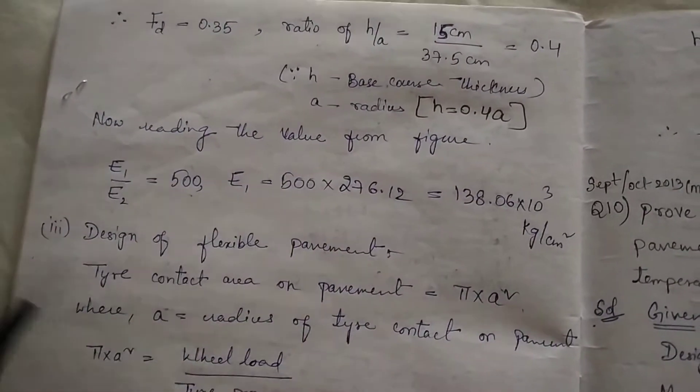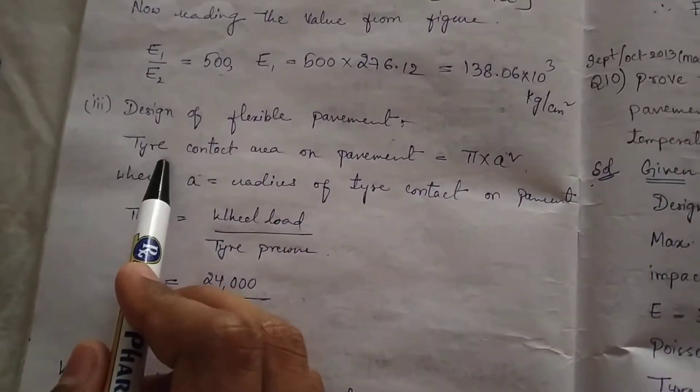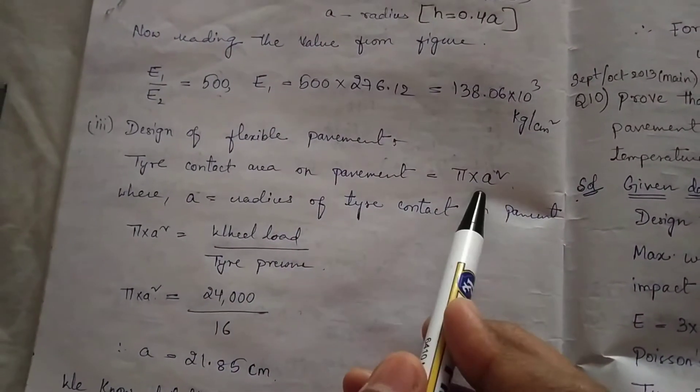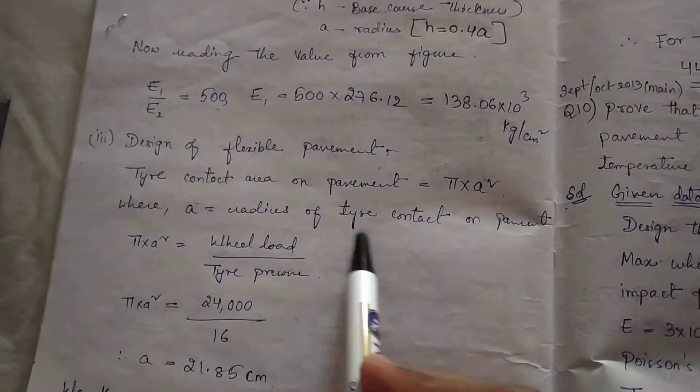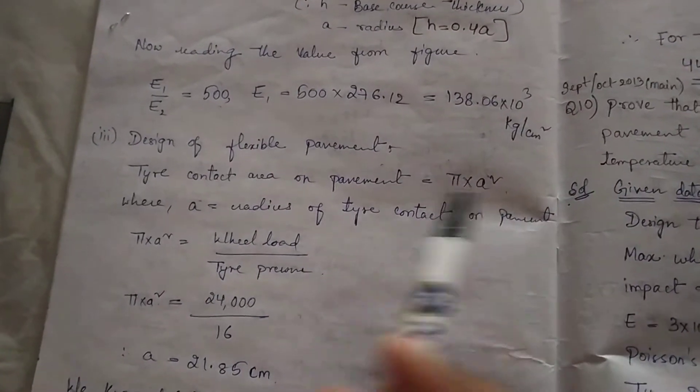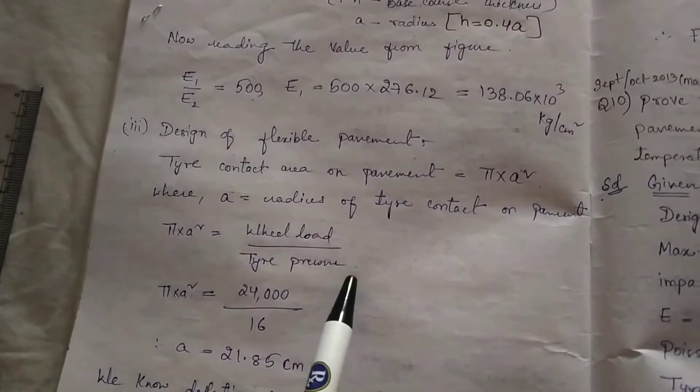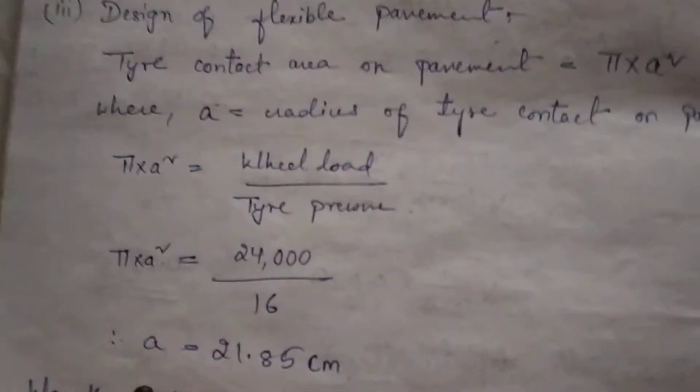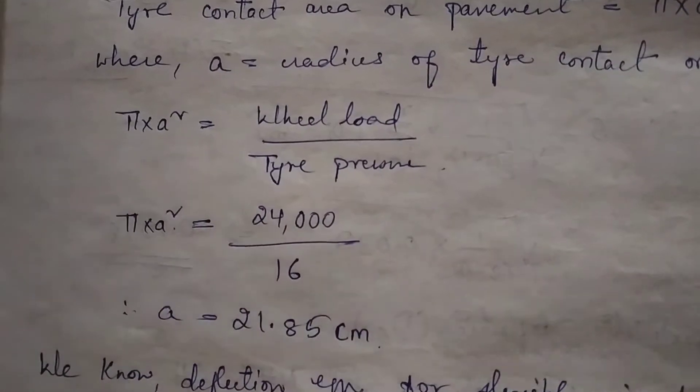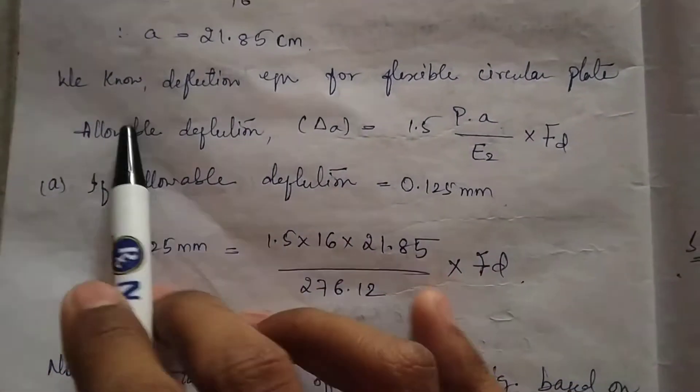Now next, design of flexible pavement. Tire contact area on the pavement equals pi A square, where A is the radius of tire contact on pavement. We have the formula: pi A square equals wheel load by tire pressure, from which we can get the value of A in centimeters.